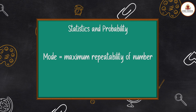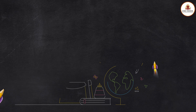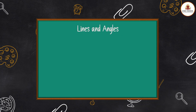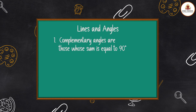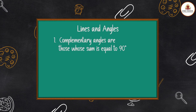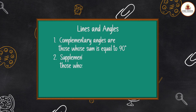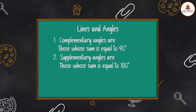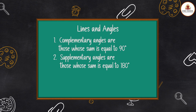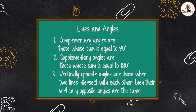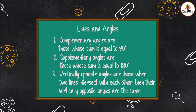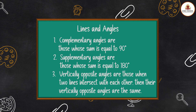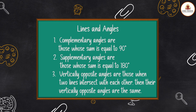Mode = the value with maximum frequency. Lines and Angles: 1. Complementary angles are those whose sum equals 90°. 2. Supplementary angles are those whose sum equals 180°. 3. Vertically opposite angles: when two lines intersect each other, their vertically opposite angles are equal.